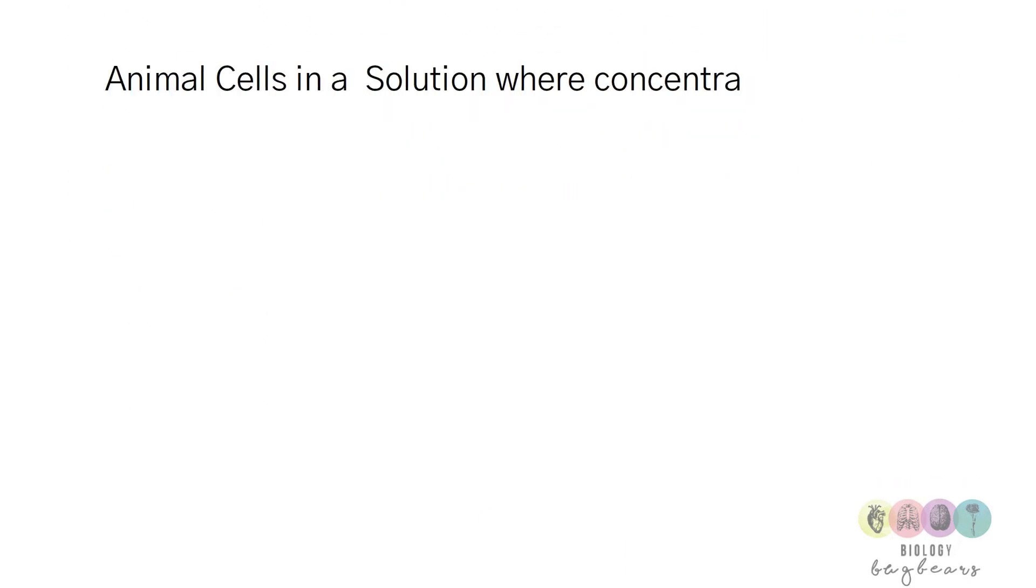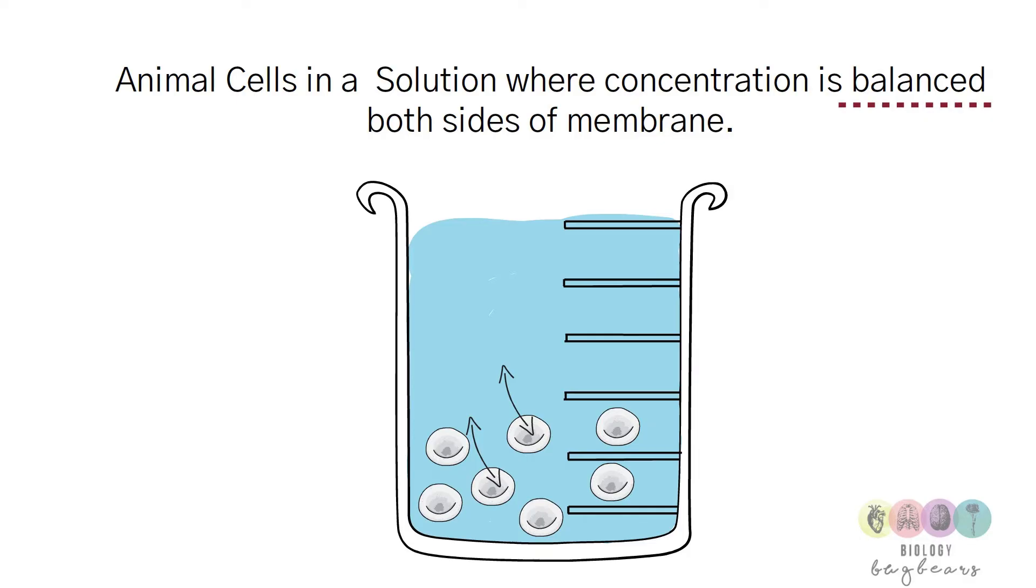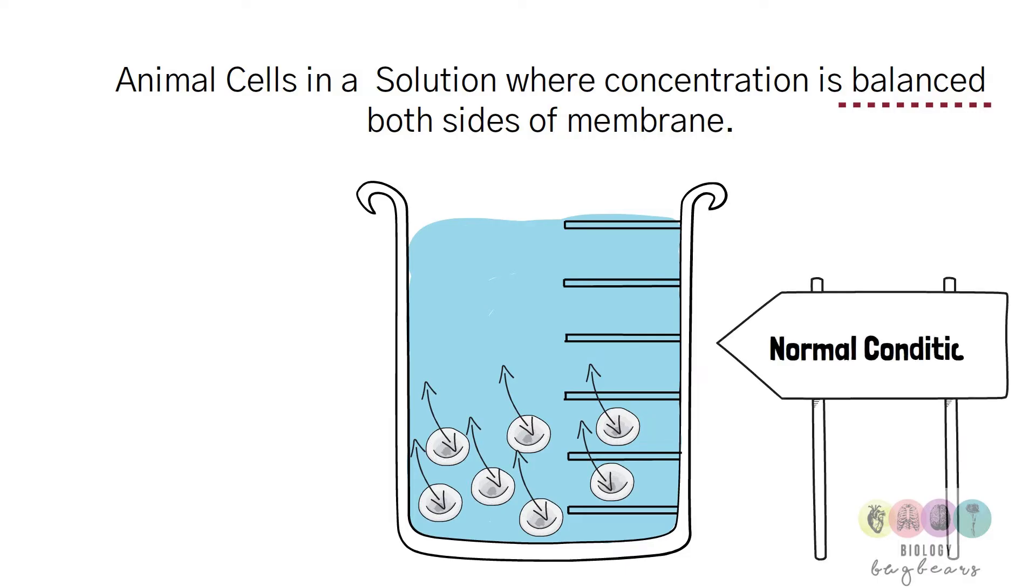So what happens when animal cells are placed in a solution where the concentration is balanced on either side of the membrane, so it's the same on one side as it is on the other? Well water is just going to move in and out of the cell in both directions and there won't be any net movement in any particular direction, so this is what happens in normal conditions. There's no change to the cell.